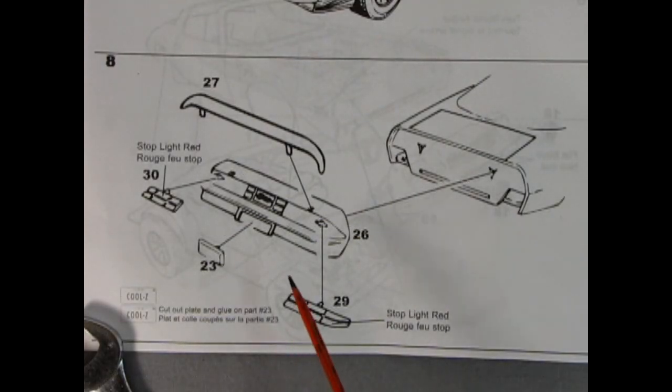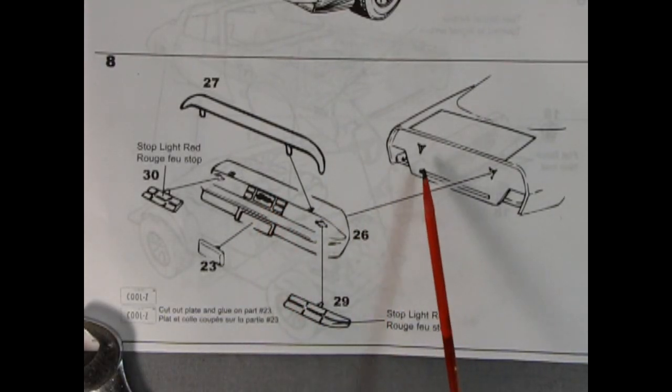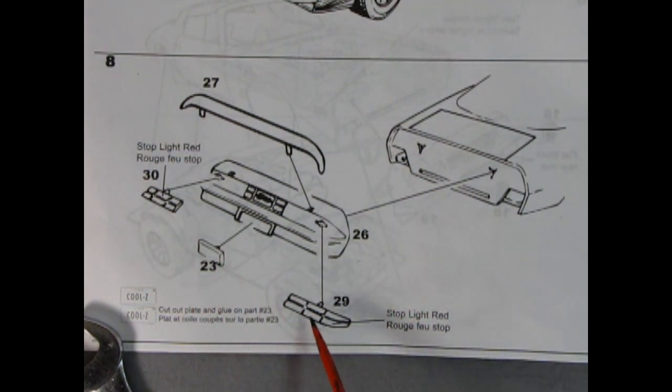Then here's the back end going together, which includes the rear clip popping into these two little holes. Then we've got our rear tail lamps, which you'll have to paint a little stoplight red. Just have a good look at a real Camaro photo. You'll see what I mean. And then we've got our rear spoiler being put on place. And then our license plates going on. And here it says cut out plate and glue on part number 23. And it looks like it is a cool Z from Iowa.